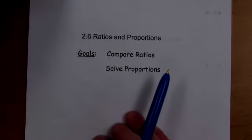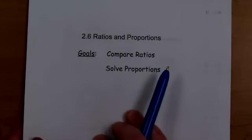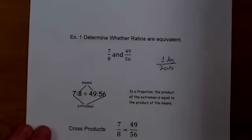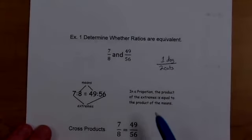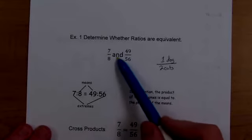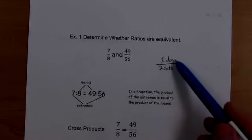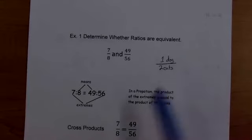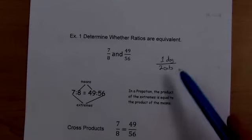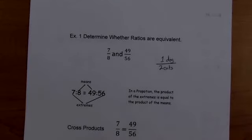You should be familiar with ratios. You see them all the time. So what is a ratio? A ratio is like 7:8 and 49:56. It's a comparison of two things. So let's look at this ratio. One dog for every two cats. This is a ratio. It's a one to two ratio.